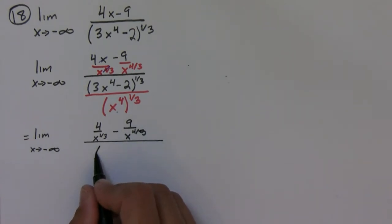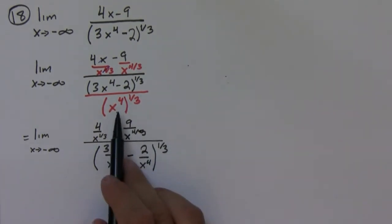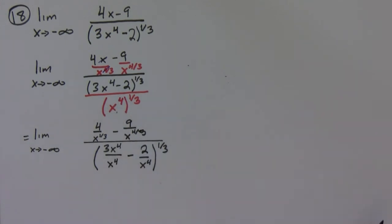Then we have three x to the fourth over x to the fourth minus two over x to the fourth, and all this is to the one-third. So all I did was bring the x to the fourth inside.